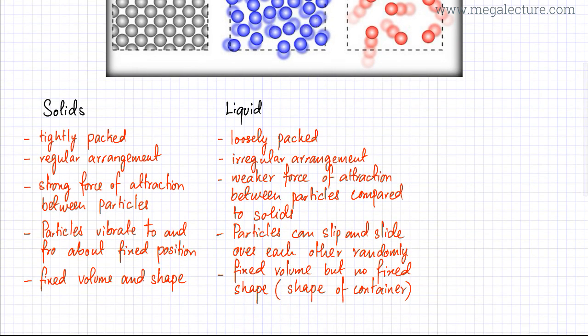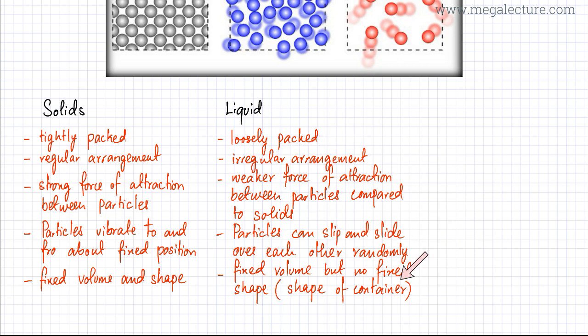In liquid state, liquids have a fixed volume. So if you buy a one-liter bottle of water, it's going to remain one liter of water. But the shape is not fixed — if you put water in a glass, the shape would change. The shape is always that of the container, whatever container you put it in. So the shape is no longer fixed, but the volume is still fixed. Liquids are also not very compressible because they have only tiny gaps, so they might be compressed slightly, but not very much.